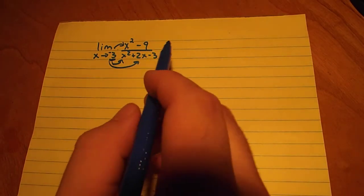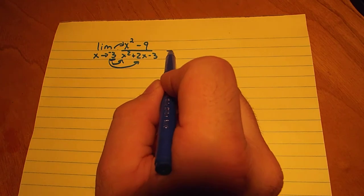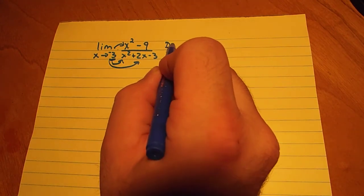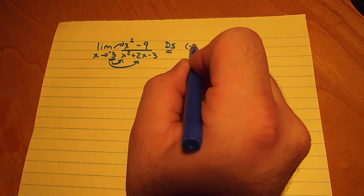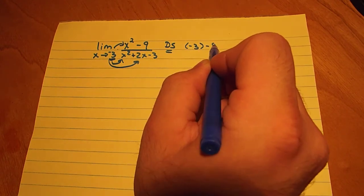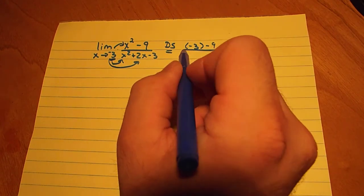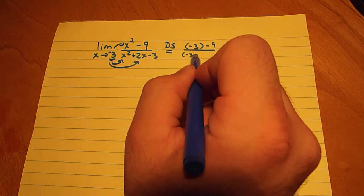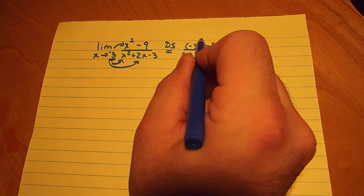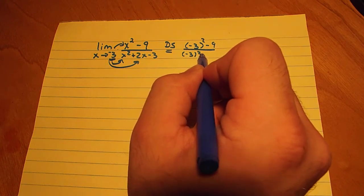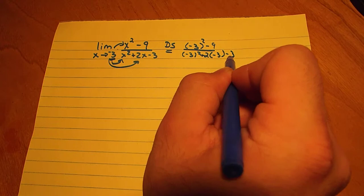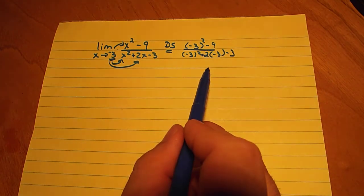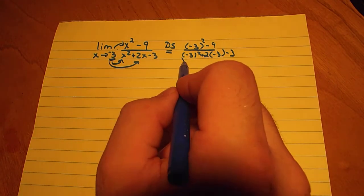So if we try for this problem we use direct substitution, so we end up with negative 3 squared minus 9 all over negative 3 squared plus 2 times negative 3 minus 3. Okay, let's bring this down here.